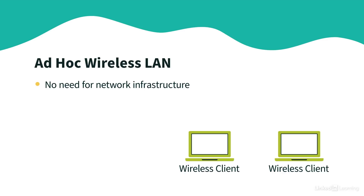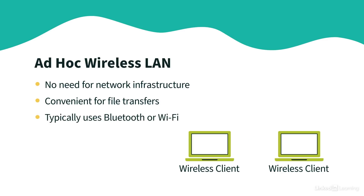Now while this type of network doesn't scale — it wouldn't be suitable as the primary type of wireless LAN for a business, or even a home — it's very convenient for the occasional file transfer between devices. A common example of an ad hoc wireless LAN is using the AirDrop feature between a couple of Apple iPhones to transfer something like a photo or a video.